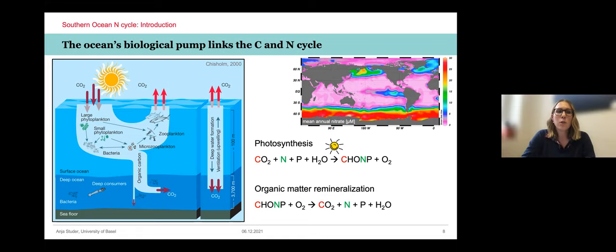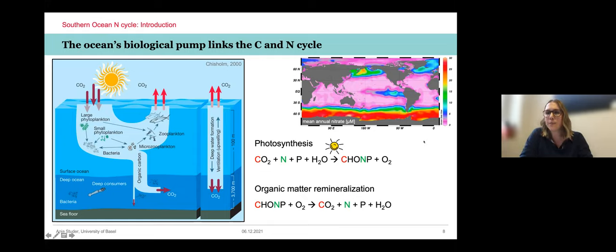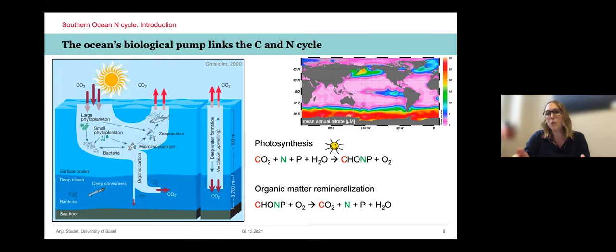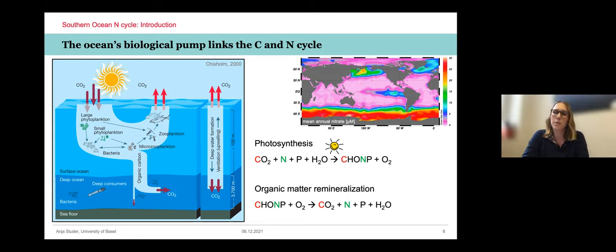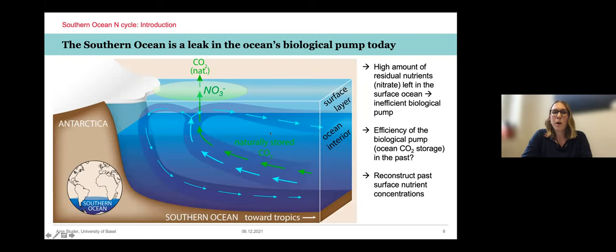Today, the biological pump is not really working at its full capacity in the Southern Ocean. A map of surface nitrate concentrations shows red colors indicating a lot of nutrients like nitrate left in the surface ocean on an annual basis, meaning the phytoplankton are not taking up all that nitrate — a missed opportunity to store CO2 in the ocean interior. The reason is that they don't have enough light and iron to grow. So the biological pump is leaking CO2 to the atmosphere because it's not working at full capacity.